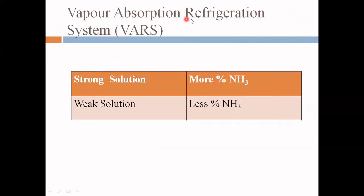To understand the VARS we need to understand the concepts of strong solution and weak solution. The basic VARS is done with ammonia and water, known as the aqua-ammonia vapor absorption refrigeration system — 'aqua' means water. In this system, the solution circulates as either a strong solution or a weak solution. Strong solution means the percentage of ammonia (NH3) is more as compared to the water.